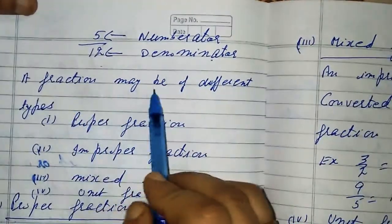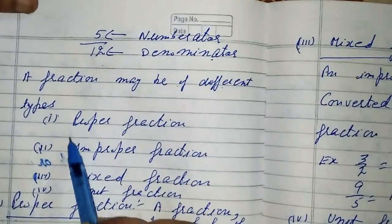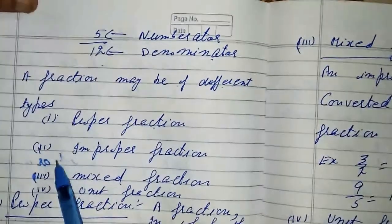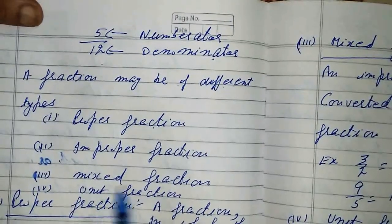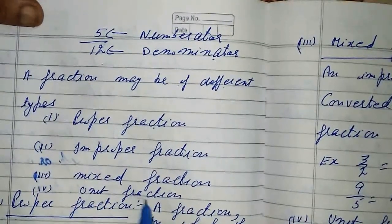A fraction may be of different types. First, proper fraction. Second, improper fraction. Third, mixed fraction. Fourth, unit fraction.